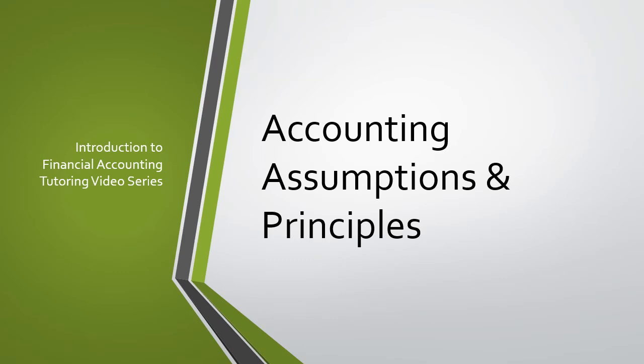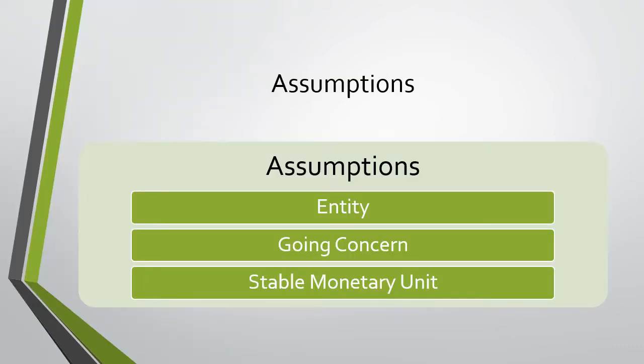Today we will be going over accounting assumptions and principles. Our first assumption is the entity assumption. This means that the owner is separate from the company it owns. For example, if the owner goes and puts a new pool in their backyard, they cannot then go and put that on the company's books. They must remain separate.